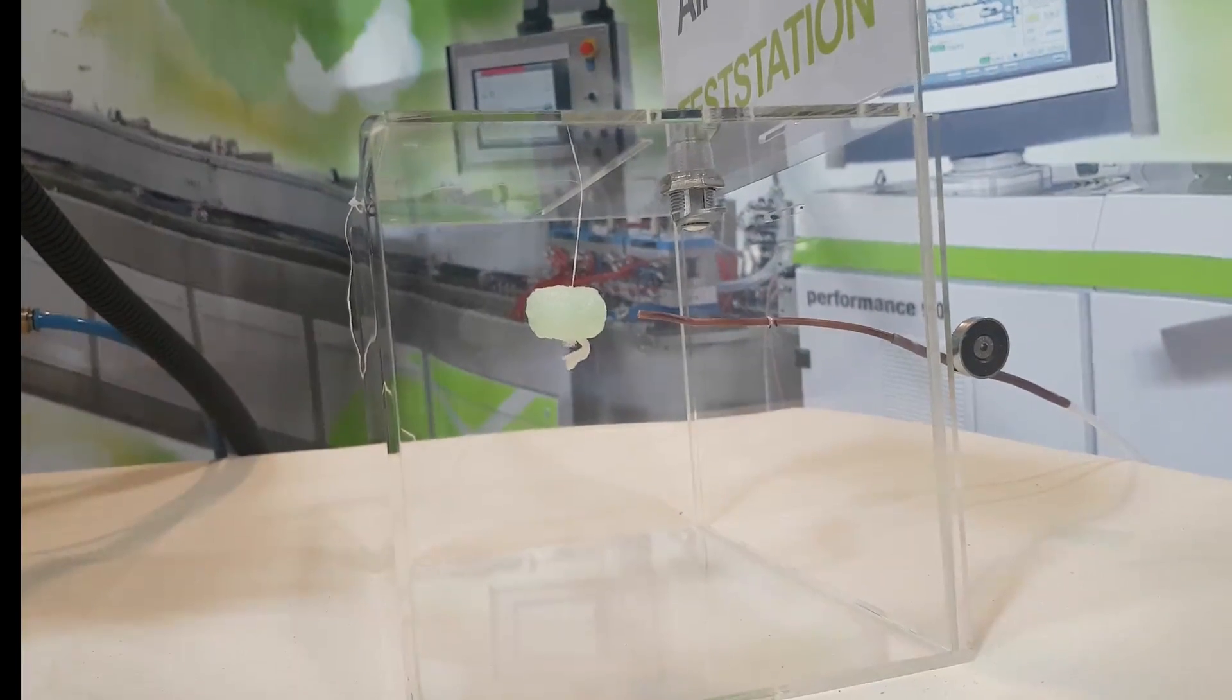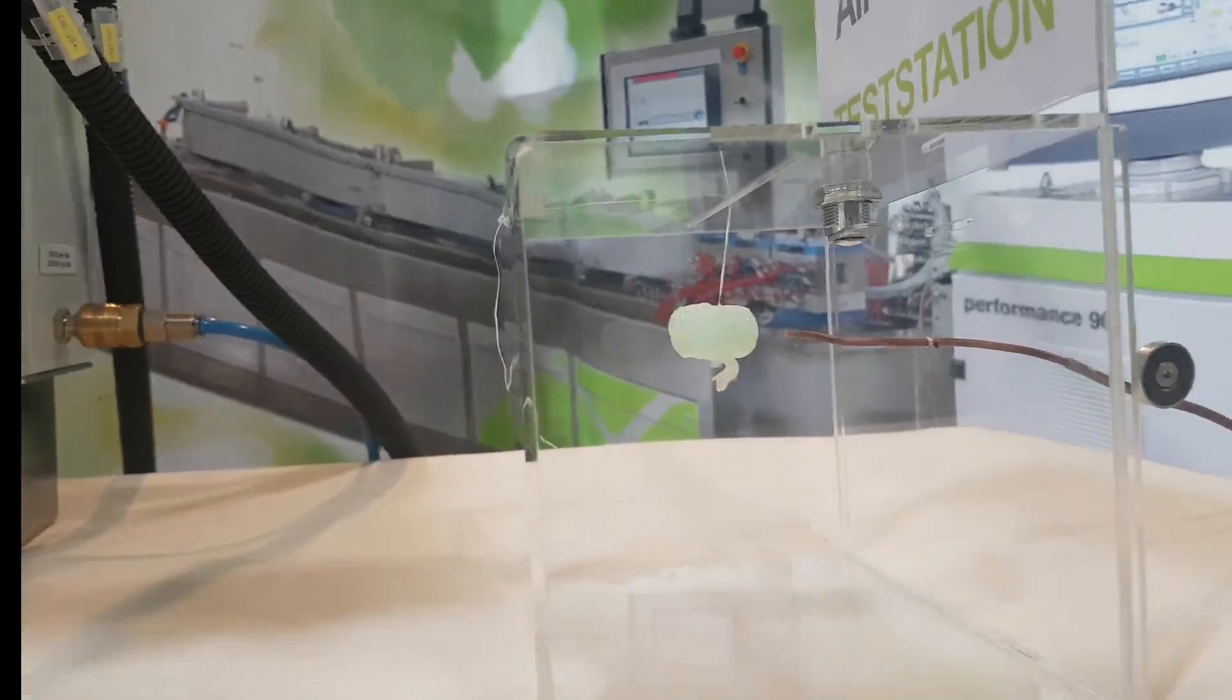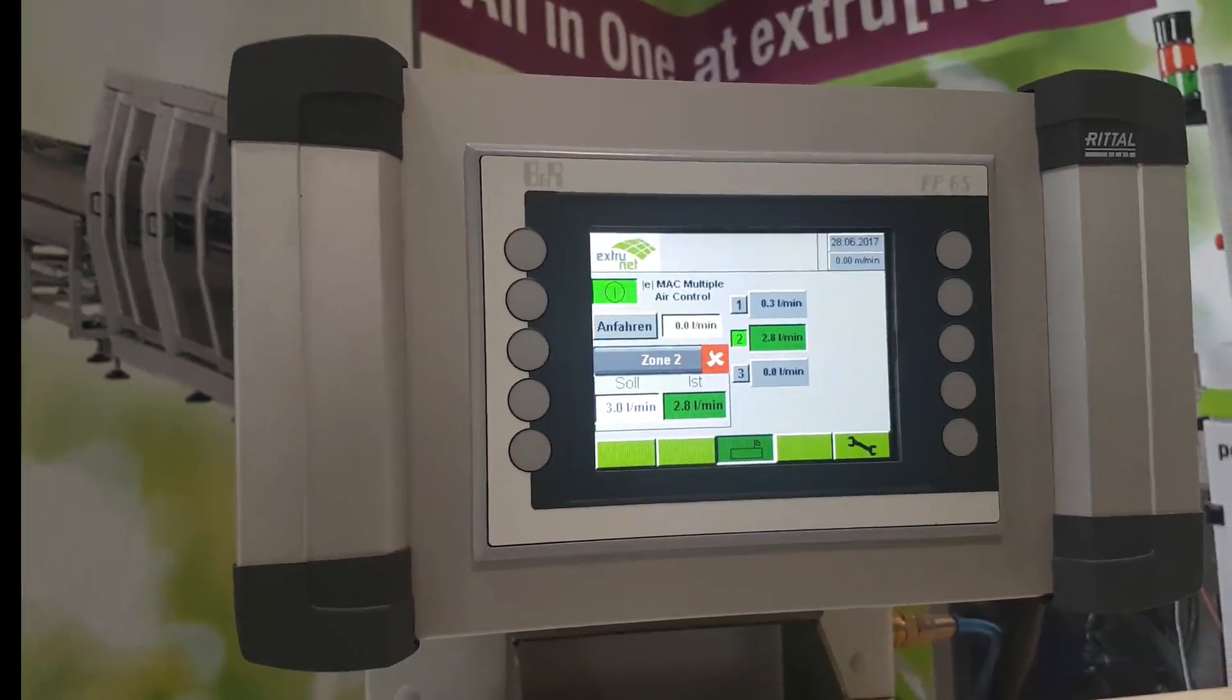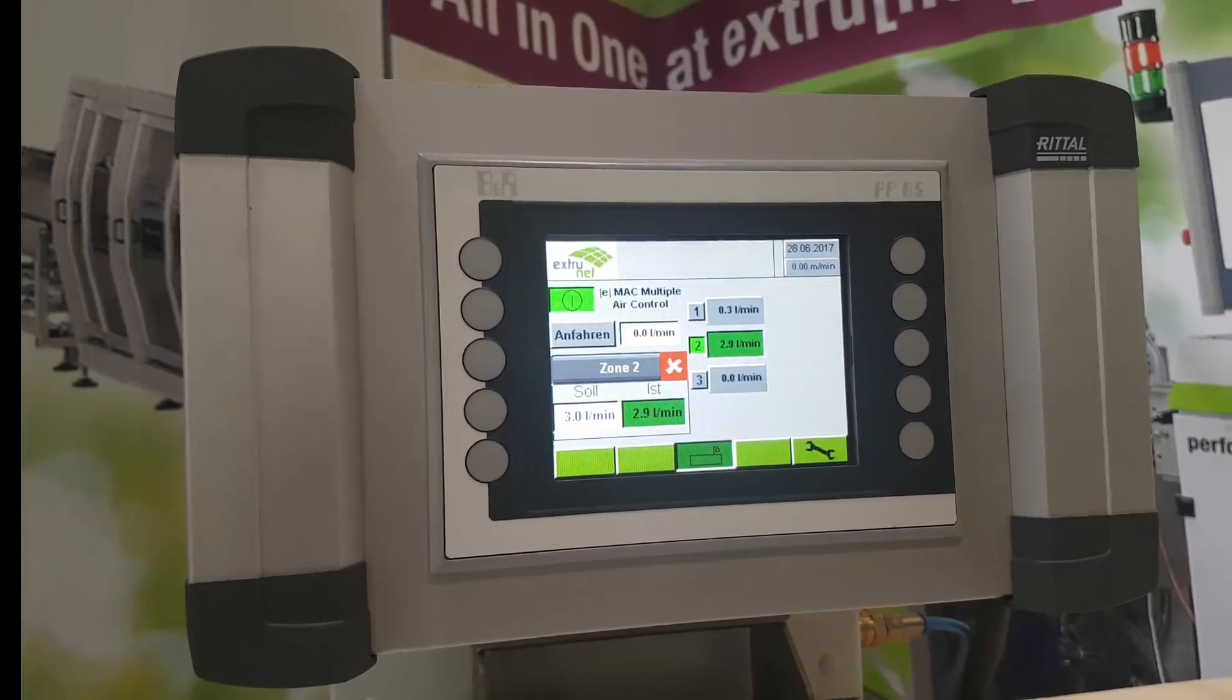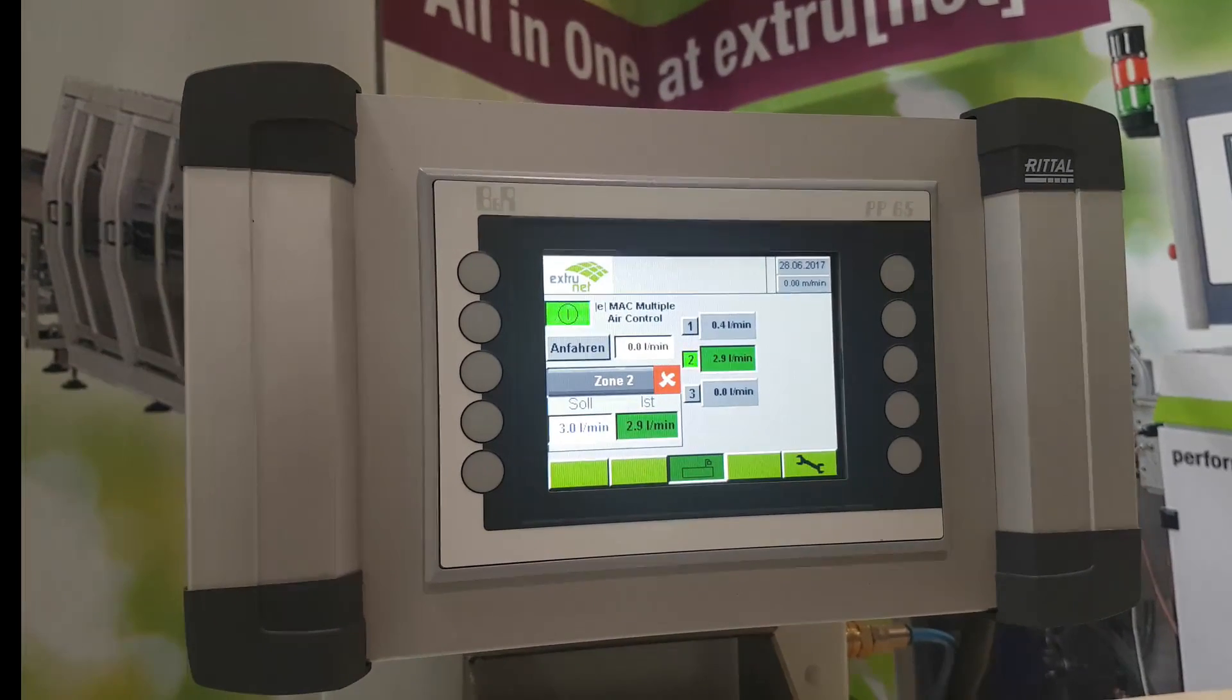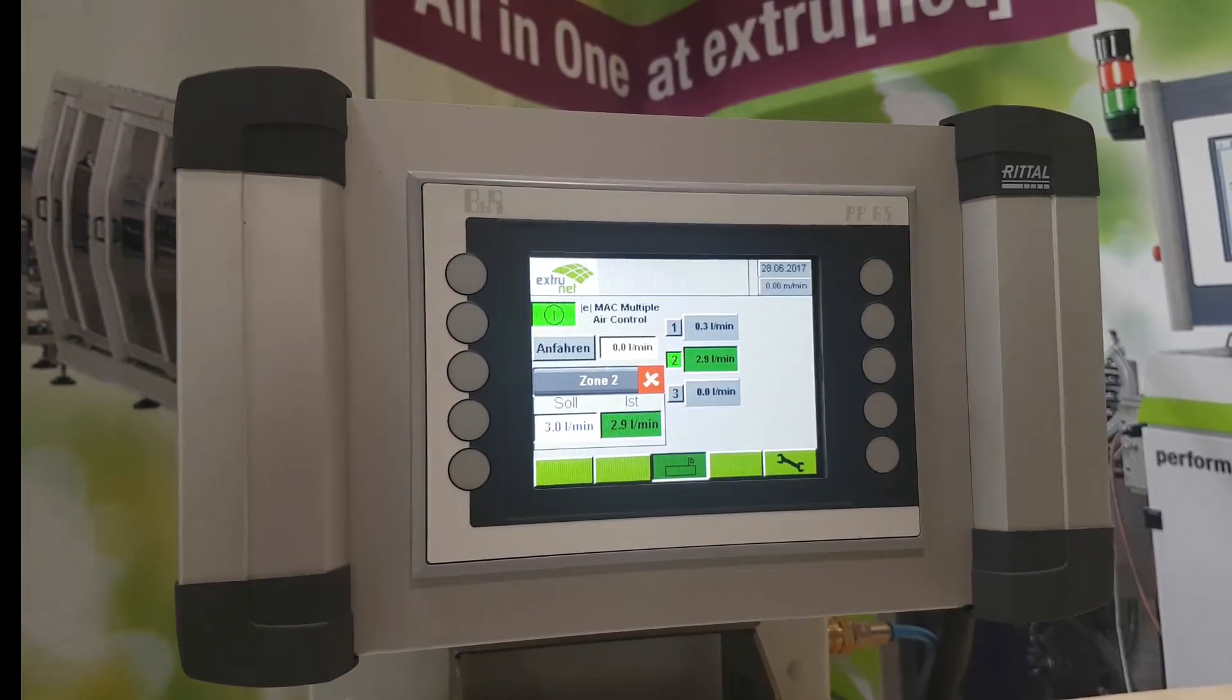So this is 3 liters per minute, which is already quite nothing. If we go down, the regulation or adjustment is not ready now but it's 2.8 liters, 2.9, and finally it will come up to 3.0. And the airflow is very stable. It takes a while.